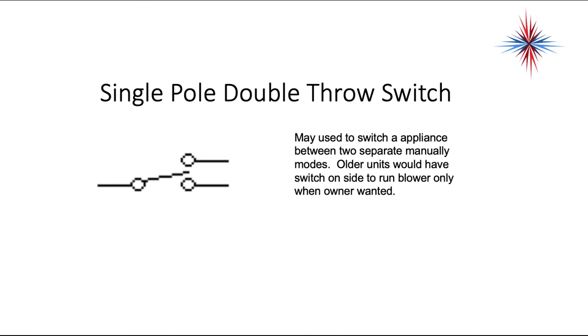This is a single pole double throw switch. It may be used to switch an appliance between two separately manually modes. Older units would have the switch on the side to run the blower only when the owner wants to. You'll see this in most thermostats where there's a switch for fan, on, or auto, or even it's used when we go from cooling to heating in some thermostats.